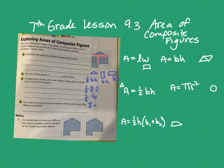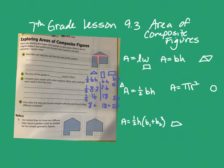For the first rectangle, the base is three and the height is six, so three times six is 18. For the last rectangle, the base is five and the height is four, so five times four is 20. I add all the areas together: eight plus 18 plus 20.